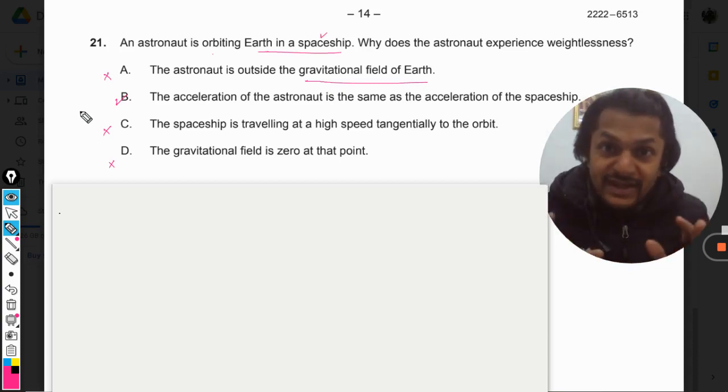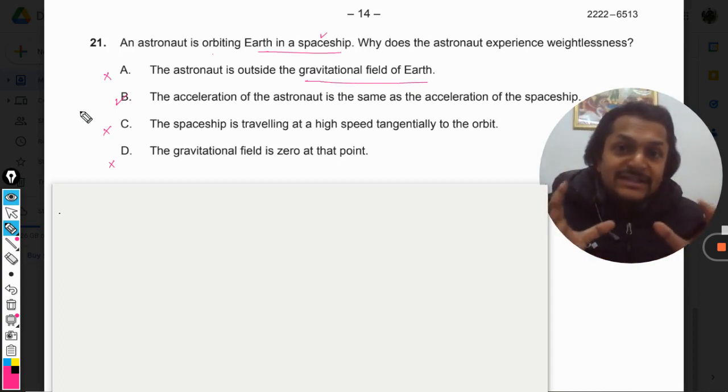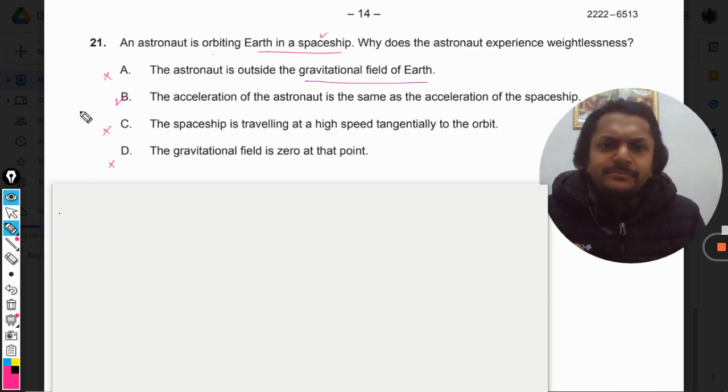Now let us go to option B. We know that the option is correct, but let me explain you. The acceleration of the astronaut is same as the acceleration of the spaceship. To understand this, we have to consider the case of a lift or elevator, and in that case we have done the case of pseudo force.